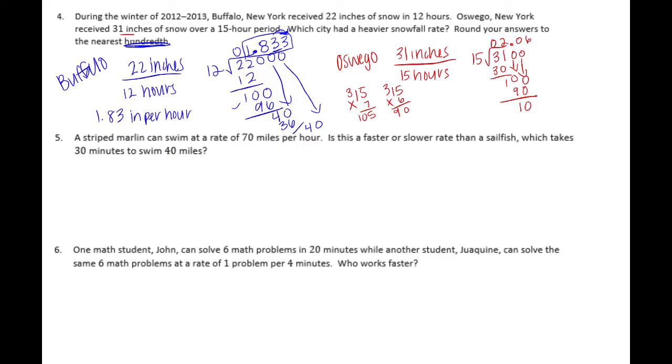We need to go to the thousandths place, so I'm going to bring down another zero. We have 100 again, so we get 2.066 thousandths, but I need to round, so that would round to a 7 because it's 6 or higher, so 2.07 inches per hour. We want to know which had a heavier snowfall rate, so 2.07 per hour or 1.83 per hour. 2.07 is more snow per hour, so our answer is Oswego.